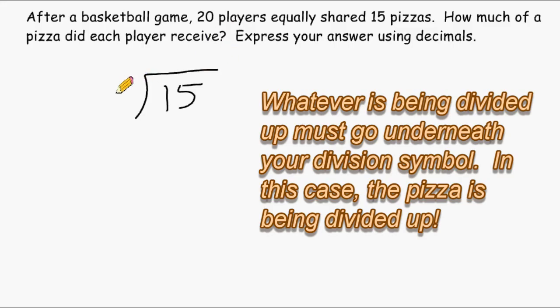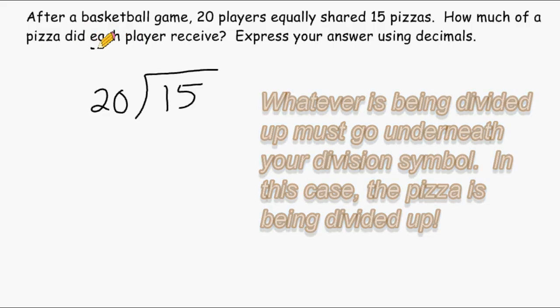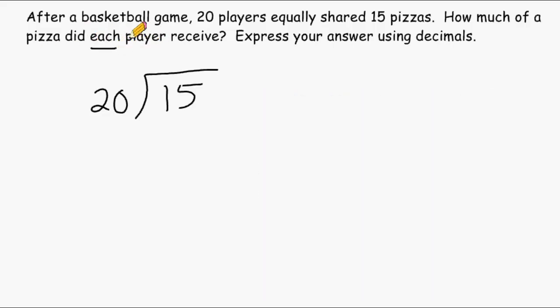And the number 20 is going to go on the outside because we are trying to figure out how much pizza each player received, and the each unit, in this case players, goes on the outside. So as a rule of thumb, I always put the each unit on the outside.